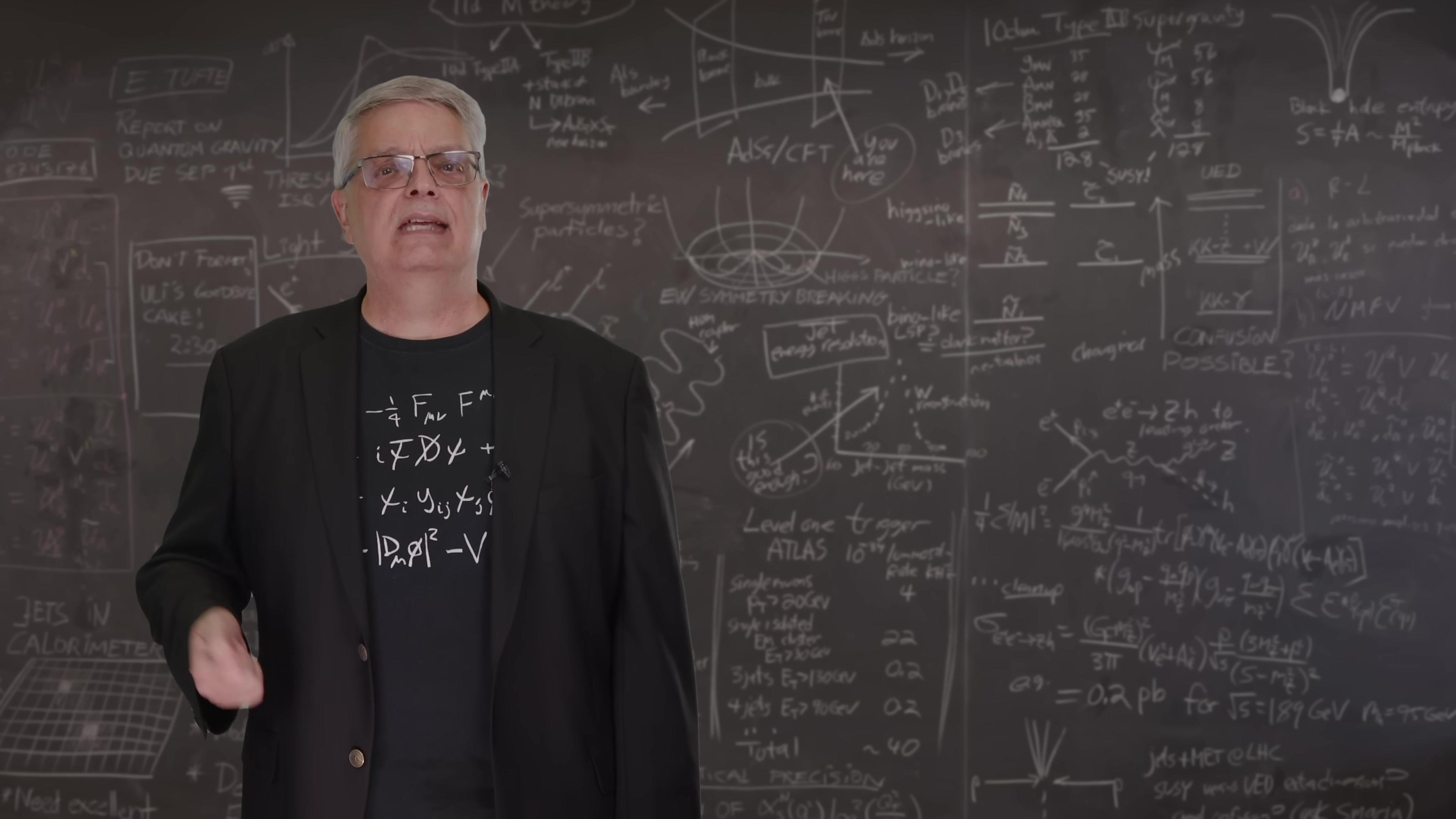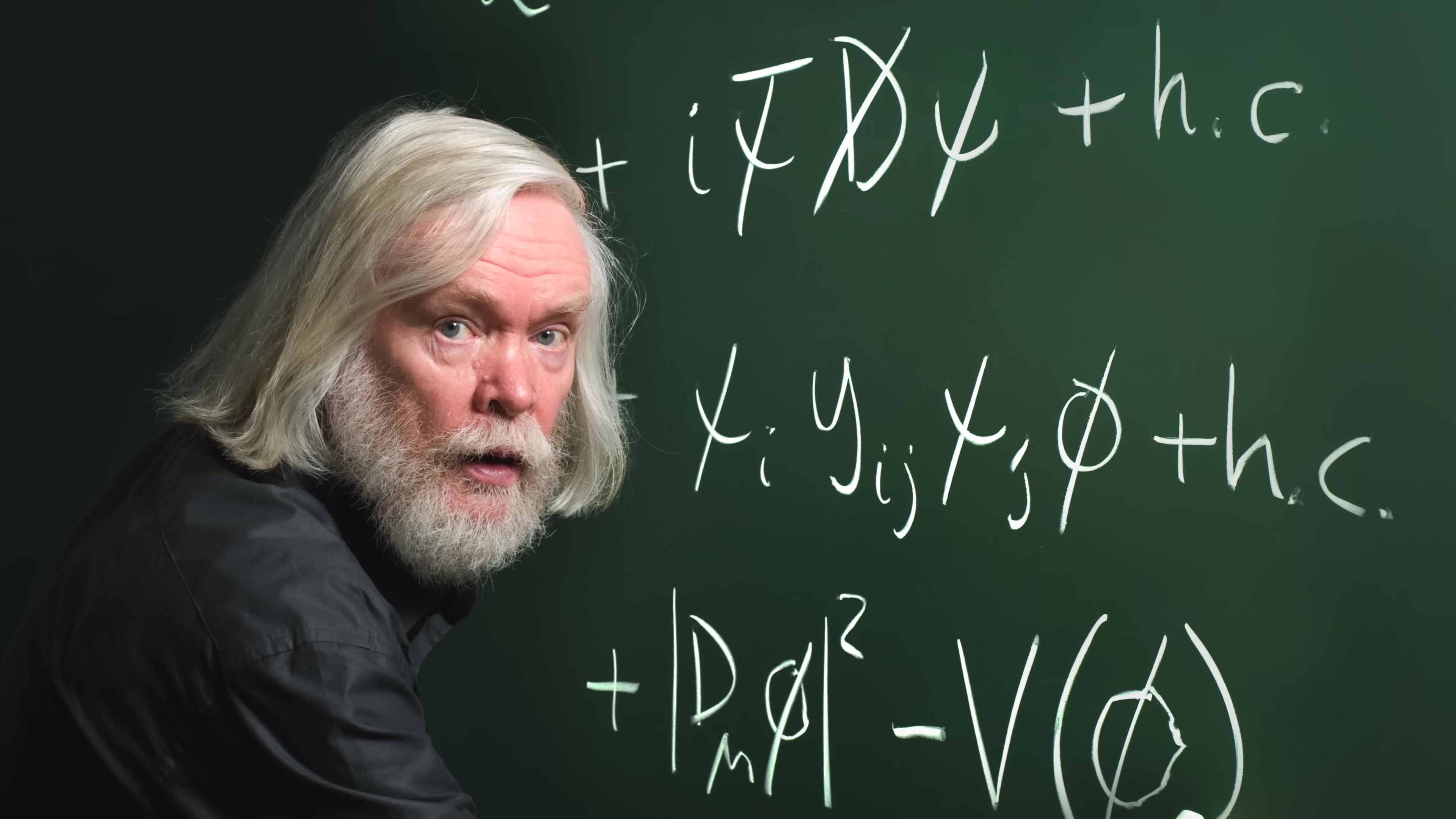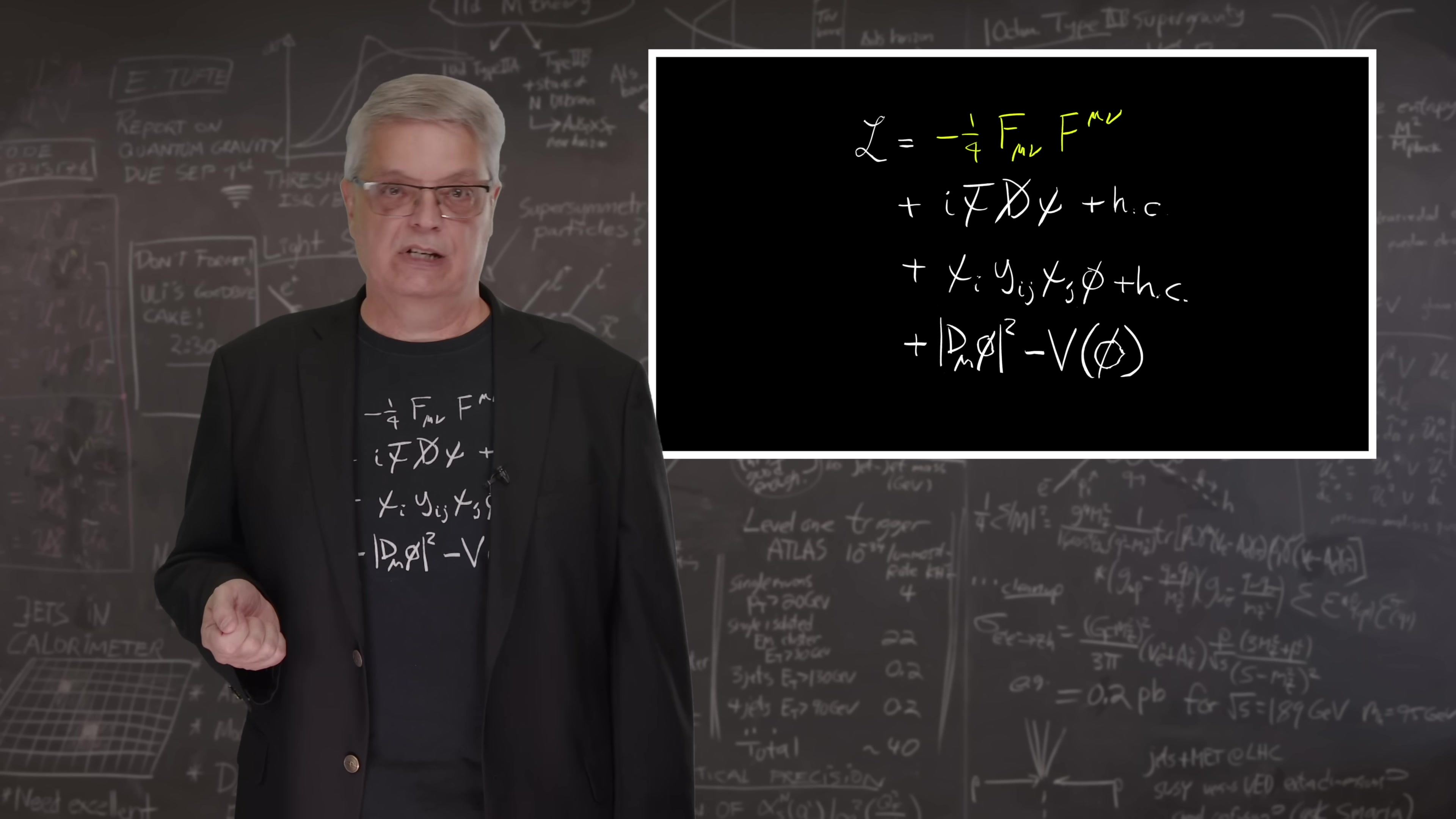So let's get back to the Standard Model Lagrangian. What does it mean? Well, let's start with this one here. It was originally written by John Ellis back in 2007 as part of a photoshoot for the CERN media department. This equation is pretty simple. The first term, the one with the Fs, that line describes the behavior of the subatomic forces, specifically the strong and weak forces in electromagnetism, and how the forces interact among themselves.